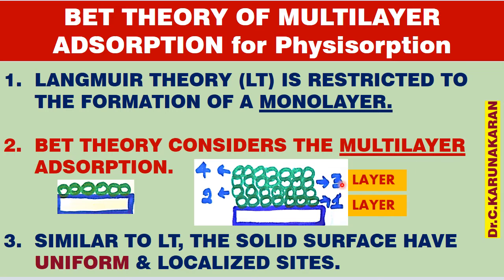BET theory considers multilayer adsorption — for example, first layer, second layer, third layer, up to the nth layer. Similar to Langmuir theory, in BET adsorption theory also, the solid surface has uniform adsorption sites. All the adsorption sites are uniform and localized — adsorption will take place at localized positions only. So the solid surface has uniform as well as localized adsorption sites.